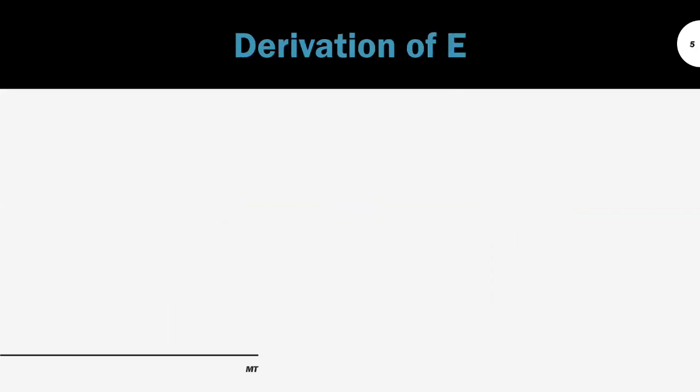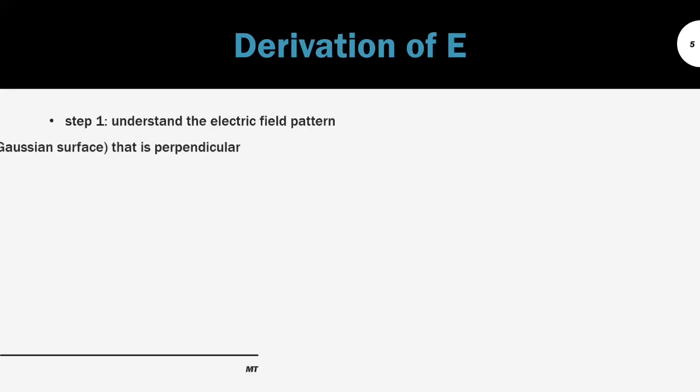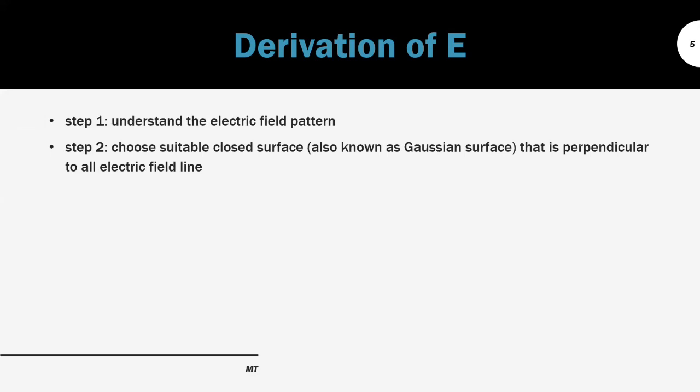Next, we are going to use the definition and the formula to derive the electric field strength. In general, the first step is to understand the electric field pattern. Then, based on the field, we choose a suitable Gaussian surface that should be perpendicular to all the electric field lines. Then we apply the Gauss law and the formula to obtain the electric field strength.